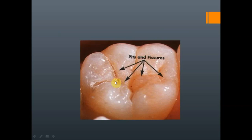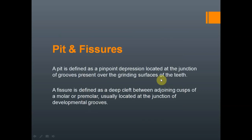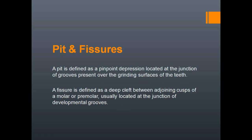As you can see, this is just a stained pit and fissure — it is not dental caries. A pit is a pinpoint depression located at the junction of grooves present over the molar surfaces. A fissure is defined as a deep cleft between adjoining cusps of a molar or premolar, usually located at the junction of the direct middle grooves. So a pit will be a point angle and a fissure will be a line angle.